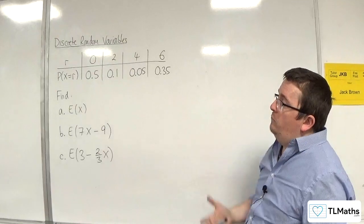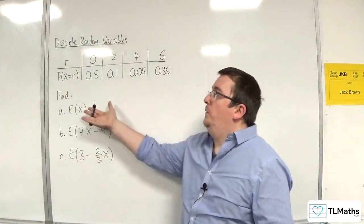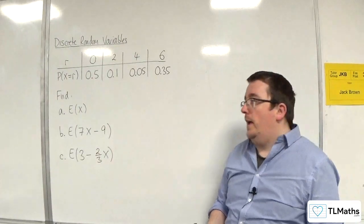So here we have a discrete probability distribution. The first thing that we need to find is E of x.